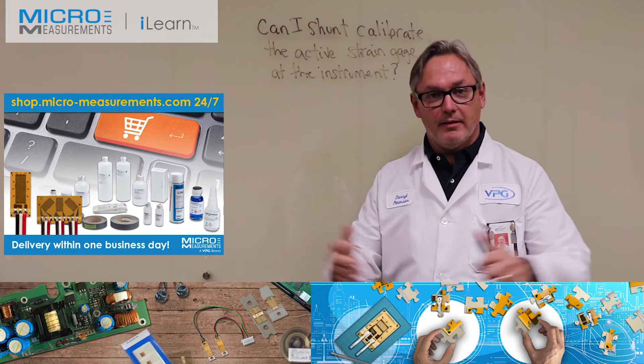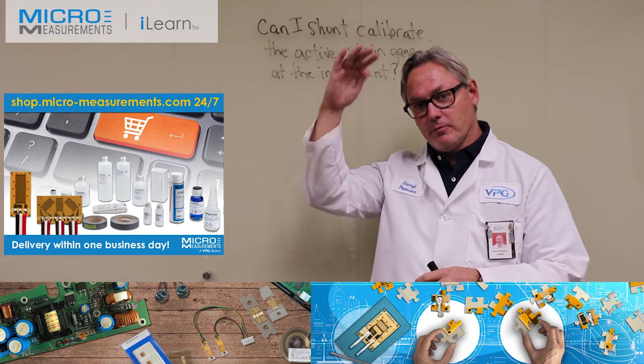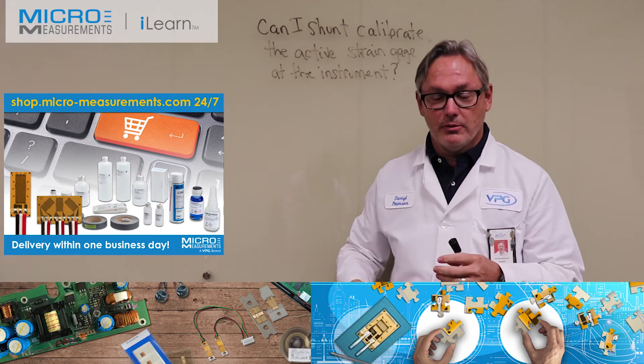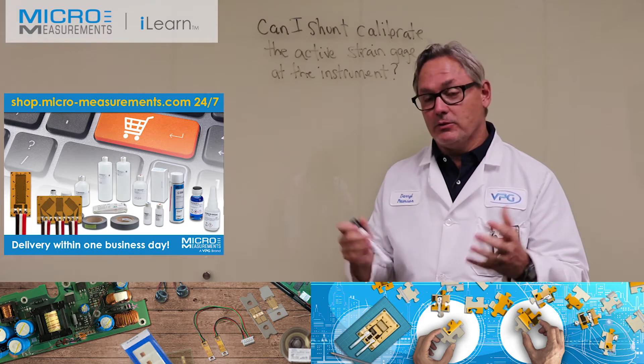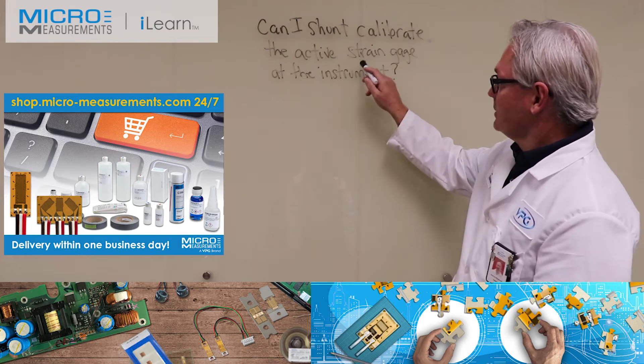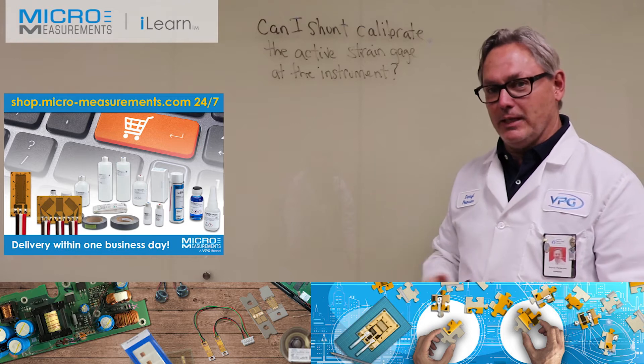One of the big drawbacks is that this can be very inconvenient. Think about your application where you might have 72 strain gauges installed on a structure. That structure may be 50 feet off the ground, meaning you have to climb around that structure, take a resistor out of your pocket, and connect it right across the active gauge. You can see that's not very convenient.